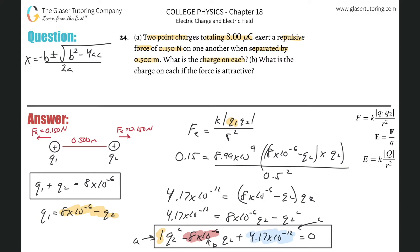Let's calculate the radical first. B squared — negative times a negative gives positive — so it's 8 times 10 to the minus 6, squared. Minus 4 times A value of 1, times C which is 4.17 times 10 to the minus 12. I'll use the rounded values. Take the square root of that, and the square root portion becomes approximately 6.88 times 10 to the minus 6.